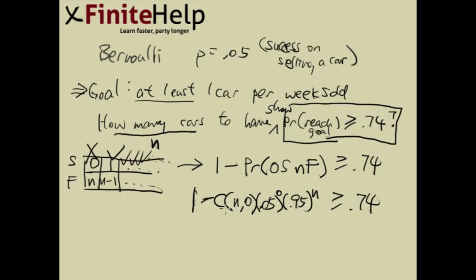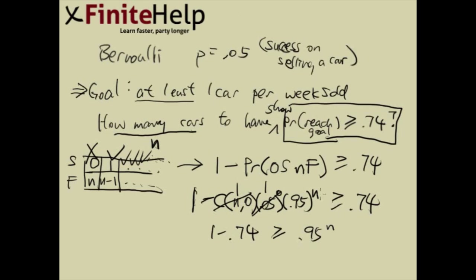What is N choose zero? Well, N choose zero is 1 — anything choose zero is 1. And anything to the power of zero is also 1. So we really only have 0.95 to the N remaining. Now, subtracting and rearranging, we get: 1 minus 0.74 is greater than or equal to 0.95 to the N, which gives us 0.26 ≥ 0.95^N.